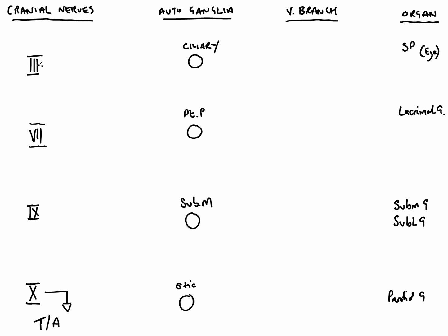If we then go to the oculomotor nerve, the oculomotor nerve gives rise to pre-synaptic fibres that pass towards the ciliary ganglion. From the ciliary ganglion, these fibres synapse with post-synaptic fibres and they pass to the sphincter pupillae of the eye, enabling constriction of the pupil. They pass from the ciliary ganglion to the sphincter pupillae via a branch of the first division of the trigeminal — the ophthalmic division. So post-synaptic fibres piggyback alongside branches of V1, the ophthalmic division of the trigeminal, to innervate the sphincter pupillae.